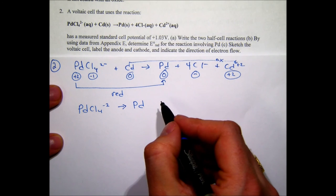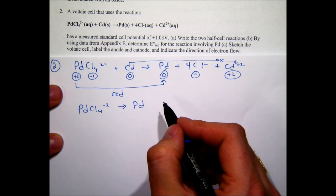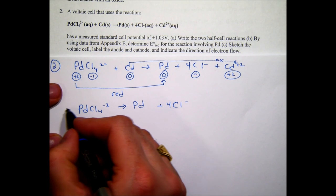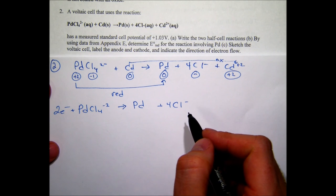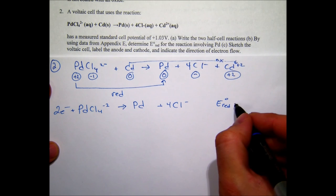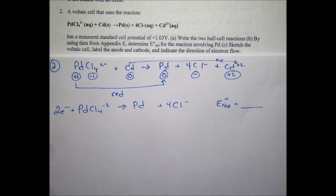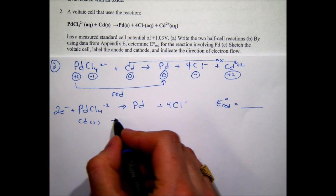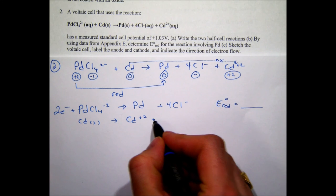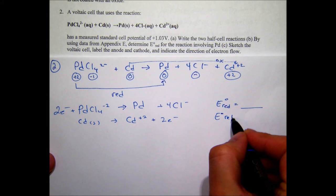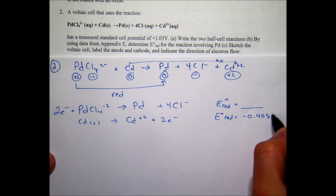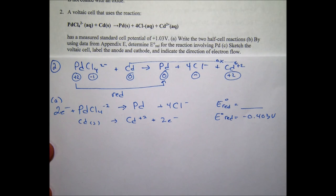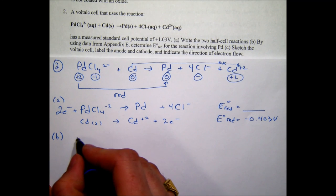We write our half reactions: PdCl₄²⁻ + 2e⁻ → Pd + 4Cl⁻ (reduction), and Cd(s) → Cd²⁺ + 2e⁻ (oxidation). The standard reduction potential for cadmium is −0.403 V. For part (b), we need to find the missing cell potential. The cell potential equals the standard reduction potential at the cathode minus the standard reduction potential at the anode.